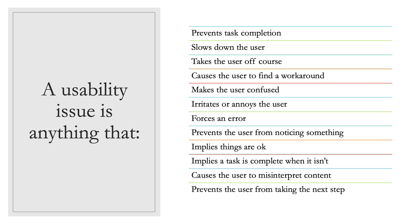A usability issue is anything that prevents task completion, slows down the user, takes the user off course, causes the user to find a workaround, makes the user confused, irritates or annoys the user, forces an error, prevents the user from noticing something, implies things are okay when they're not, implies a task is complete when it isn't, causes the user to misinterpret content, or prevents the user from taking the next step. If you see any of these things while conducting a heuristic evaluation, write them down as issues, give them severity ratings, and figure out a good solution. After this, you'll conduct a usability test based on what you find, giving you even more insight into how things could be fixed.